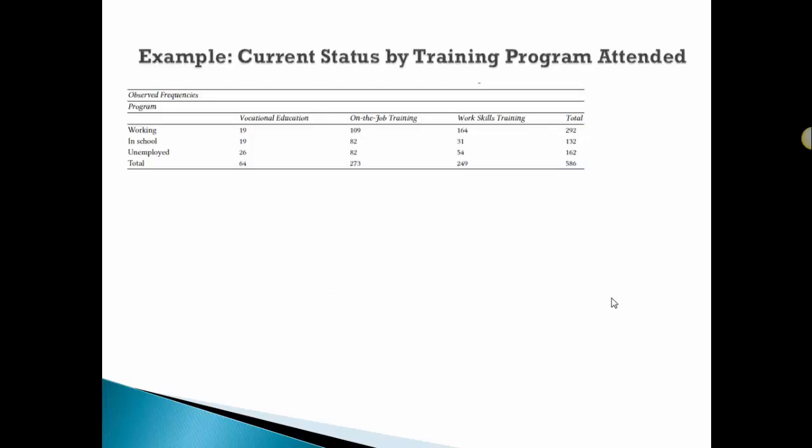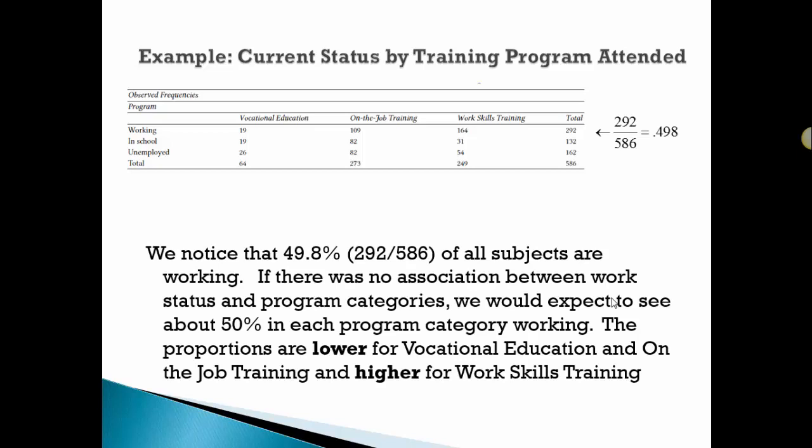Your book has a nice example here. I'm looking at training, current status by the type of training program attended. We had three statuses: working, still in school, or unemployed. We have three kinds of training programs: vocational, on-the-job training, and work skills training. We notice overall 49, almost 50% of all subjects are working. But there was no association between work status and program categories. We would expect to see about 50% in each of the categories here.